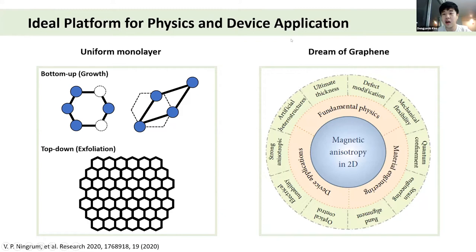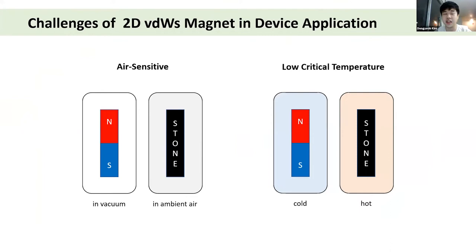However, there are major challenges in maintaining 2D van der Waals magnets and applying them to devices as well as physical experiments. First, 2D van der Waals magnets are very air sensitive, and second, they have a low critical temperature.